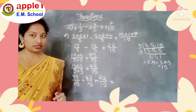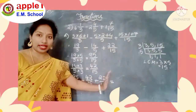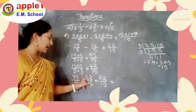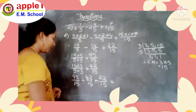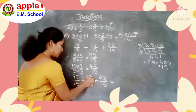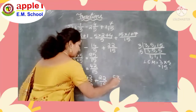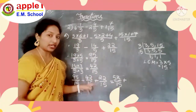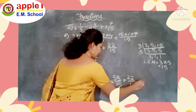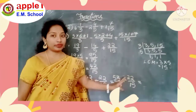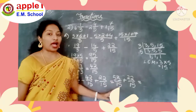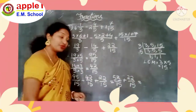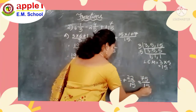Now do the simplification from left to right. First we have minus, so: 95 minus 42. 5 minus 2 is 3, 9 minus 4 is 5, giving 53. So 53 by 15, plus 22 by 15. Now add the numerators because these are like fractions: 53 plus 22 equals 75. So the answer is 75 by 15.